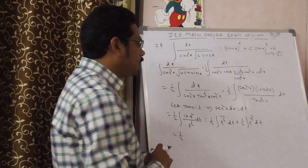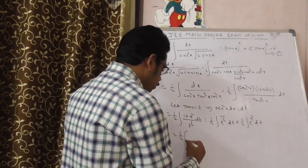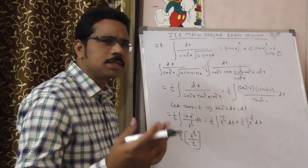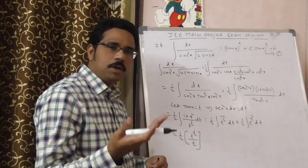Now, this is equal to 1 by 2 of integral t power minus 1 by 2. That is nothing but t power 1 by 2 by 1 by 2. Basic formula here: integral x power n, x power n plus 1 by n plus 1.